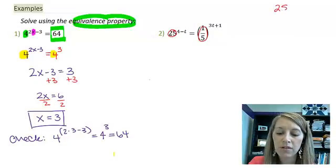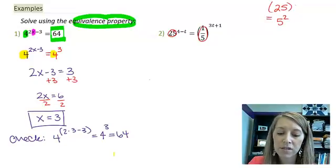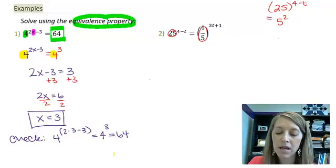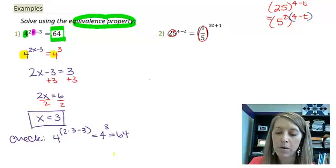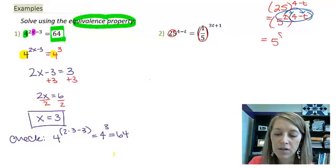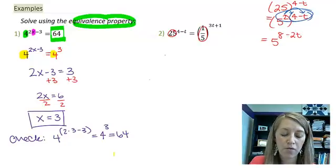If I were to take 25 and write it as a power of 5, that would be 5 squared. If I have 25 to the power of 4 minus t, that means I have 5 squared to the power of 4 minus t. If I wanted to simplify what I have in my exponent, then I would need to multiply these powers, which means I would need to distribute my 2 through that. So that is the same thing as 5^(8-2t). That's what I'm going to put over here.